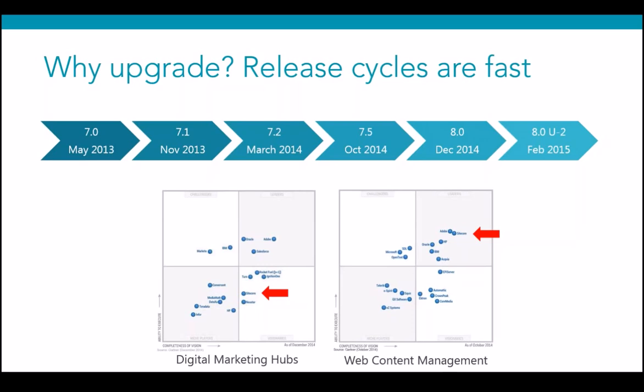The release cycles are fast. Sitecore appears in both the Gartner Web Content Management Magic Quadrant and the newer Digital Marketing Hubs quadrant — and in the digital marketing one, Adobe and Sitecore are head-to-head. The releases come fast, averaging roughly twice a year for major upgrades, which can be challenging for both partners and organizations to keep up with. If you want the newest features, you need a certain nimbleness in your approach.